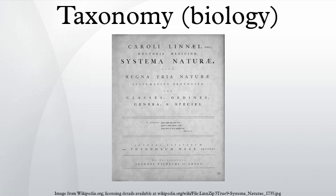Two large plant families that he first recognized are still in use today: the Asteraceae and Brassicaceae. Then in the 17th century, John Ray wrote many important taxonomic works. Arguably his greatest accomplishment was Methodus Plantarum Nova, where he published over 18,000 plant species. At the time his classifications were perhaps the most complex yet produced by any taxonomist, as he based his taxa on any combined characters.